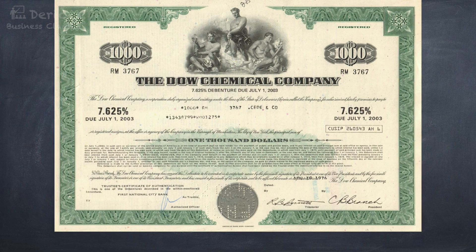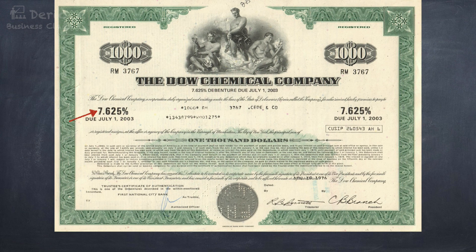This picture is a sample certificate of a bond — The Dow Chemical Company, which is the name of the issuing firm. $1,000 is the principal value of the bond, usually called par value or face value, to be paid to the bondholders at the maturity date. 7.625% is the coupon interest rate. Taking 7.625% times $1,000 par value means the bondholders will receive a coupon interest payment of $76.25 every year. July 1, 2003 is the maturity date, or due date, of this bond.